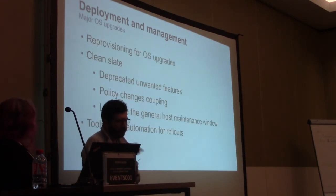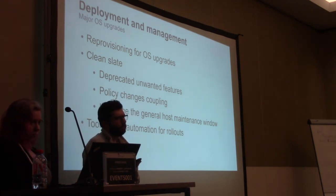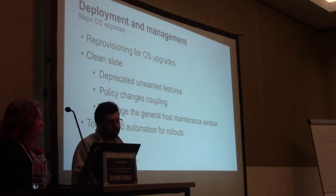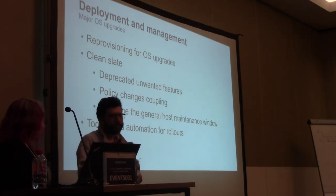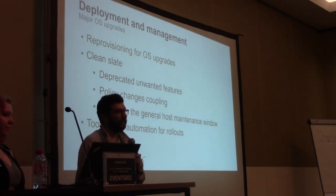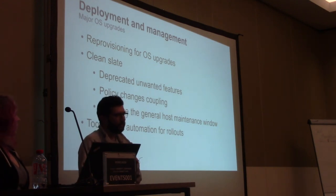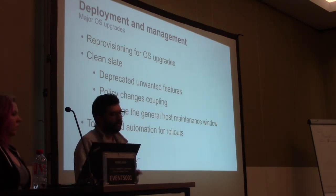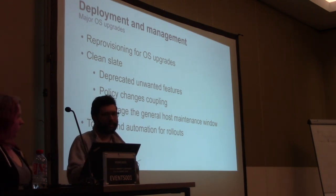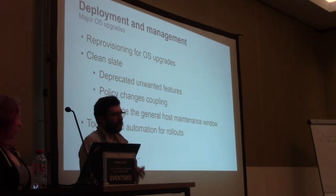On the operating system side, there are generally two major events: major OS version upgrades, like going from 6 to 7 or 7 to 8, and minor upgrades. For major upgrades, we don't do in-place updates — we always wipe and reprovision machines. We do this for a few reasons. Historically you couldn't really do in-place updates, so when we did 5 to 6 we had to do this anyway. But we still like doing it because it gives us the chance to start from a clean slate, which means you don't need to worry about quirks of the upgrade process itself, it gives us the chance to do more things together with the updates, we can deprecate features we don't want, and we can couple policy changes. We can also use the maintenance window to do other things simultaneously.